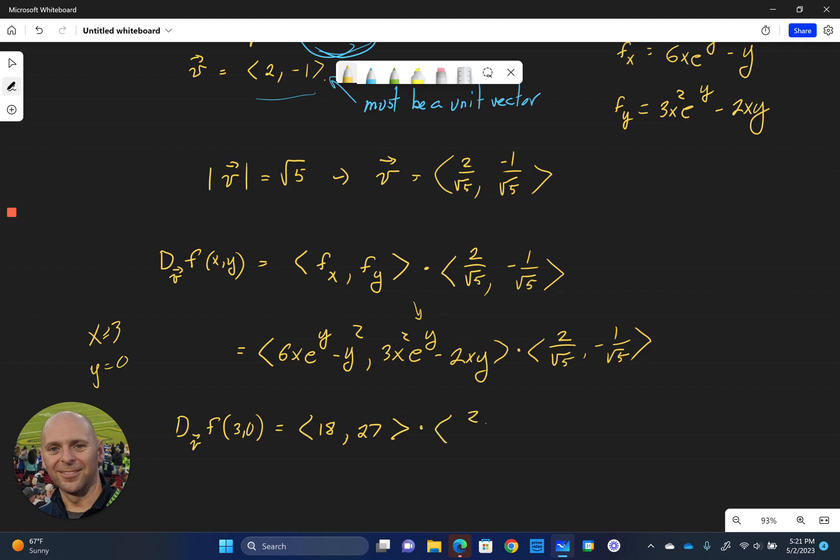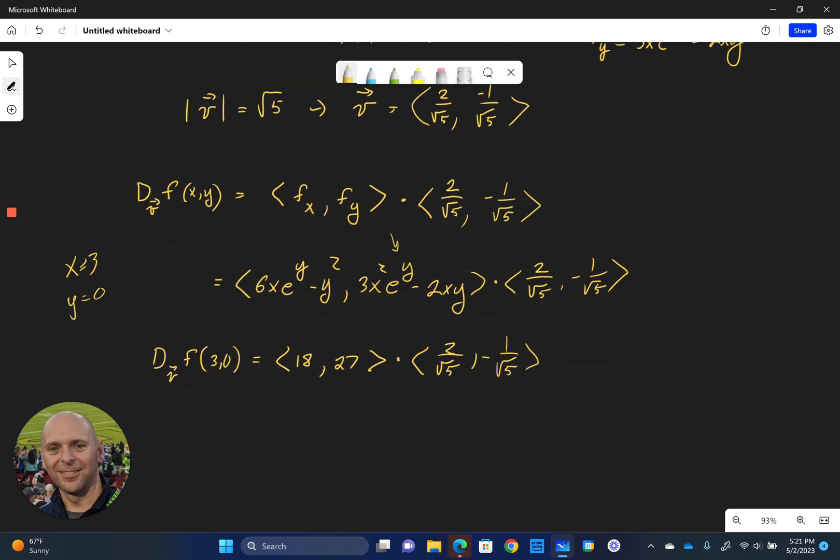And again, we're dotting that with 2 over root 5, comma, negative 1 over root 5. At this point, it's a simple dot product. So we end up with 36 over the square root of 5, minus 27 over the square root of 5. And that turns into 9 over the square root of 5. And for me, that's just fine. We can go ahead and leave it there. Maybe we want to round it off to a specific value if that's what we need to do.